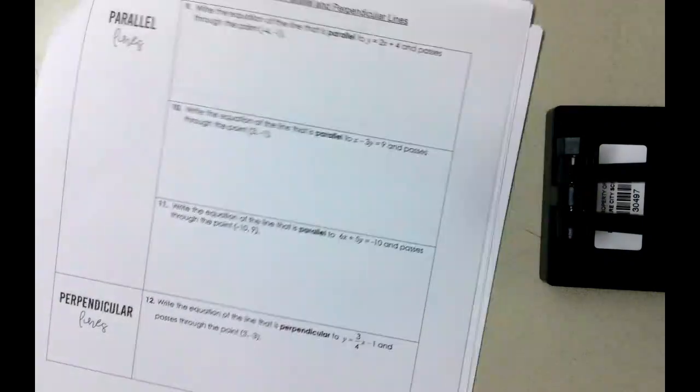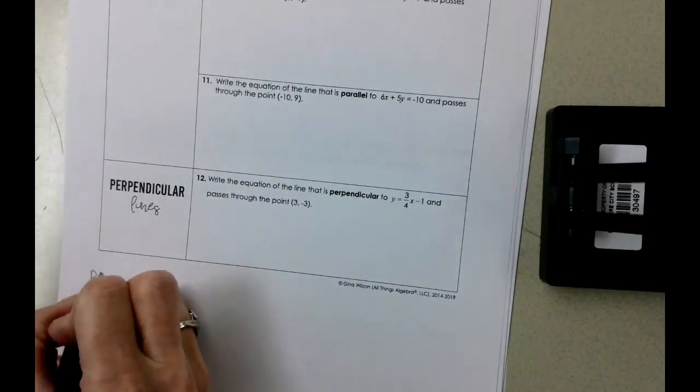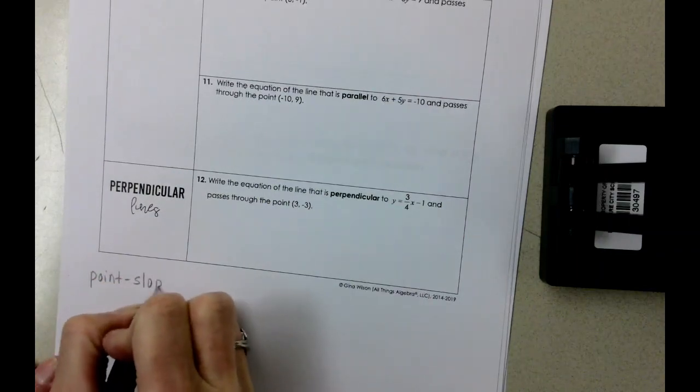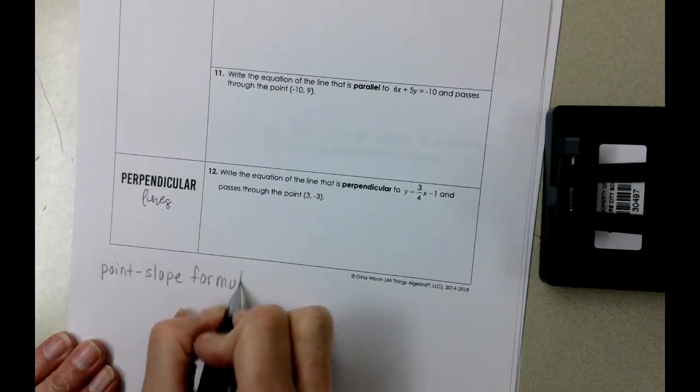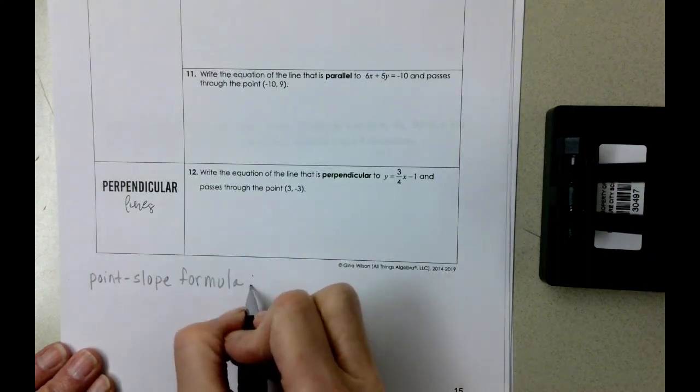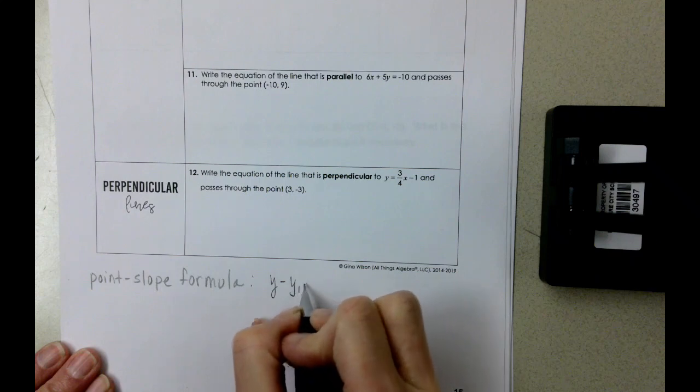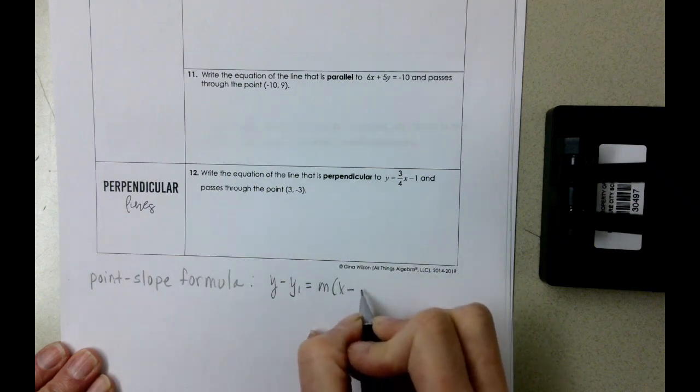First of all, point slope formula could be helpful. That's a formula that's not going to be provided to you on the state test, but our point slope formula is y minus y1 equals m times x minus x1.